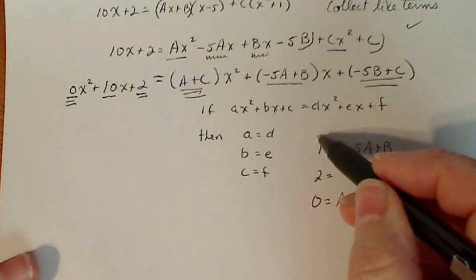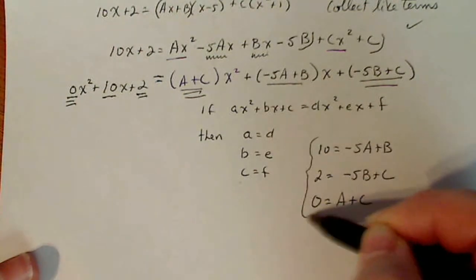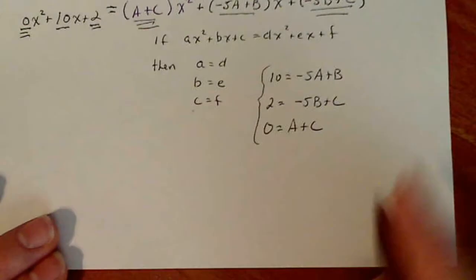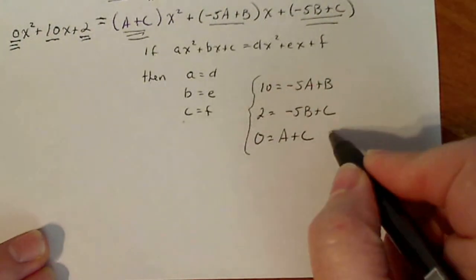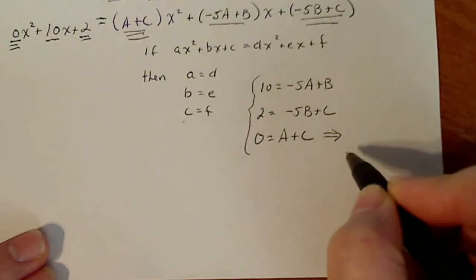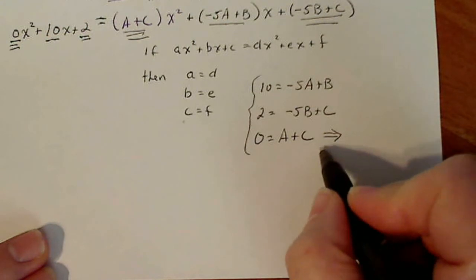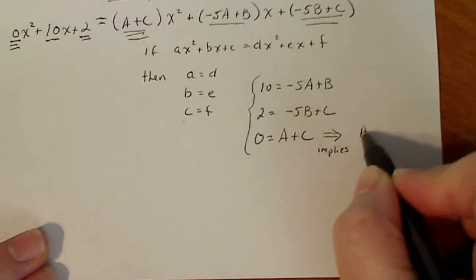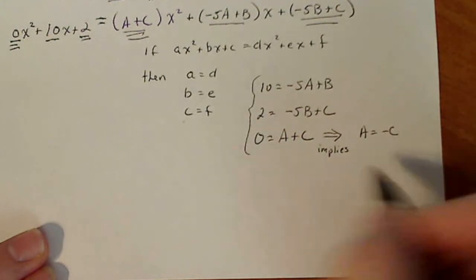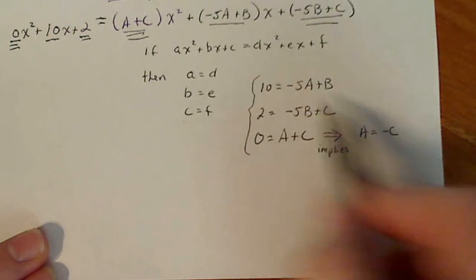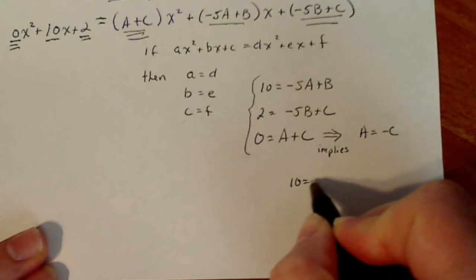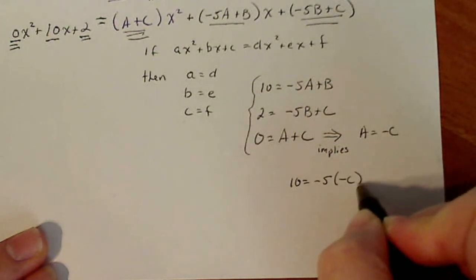Now what I have here is a system of equations, three equations, three variables, and you go ahead and solve it. It's actually not that difficult to solve this particular one. So the quickie here is from here, this implies. Now, notice I'm using an arrow because that's the word implies that a equals minus c. So anywhere up here I see an a, I can write minus c. Okay? So that means that 10 equals minus five times minus c plus b.